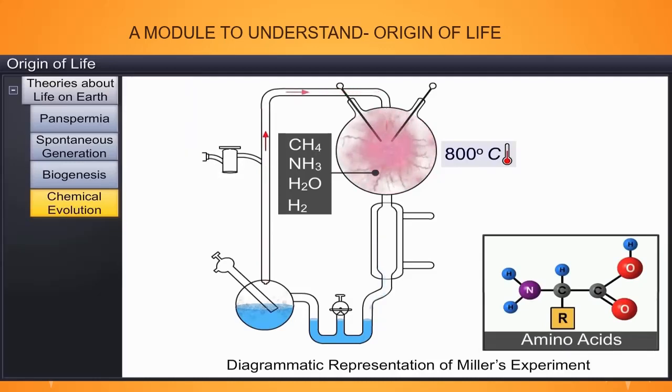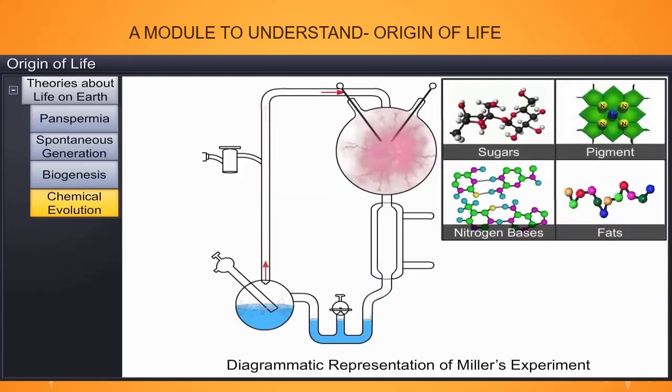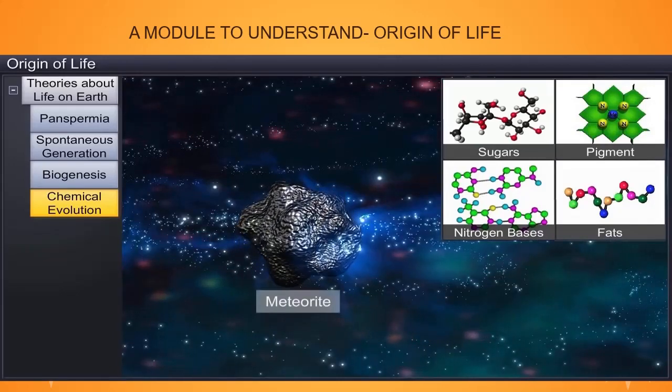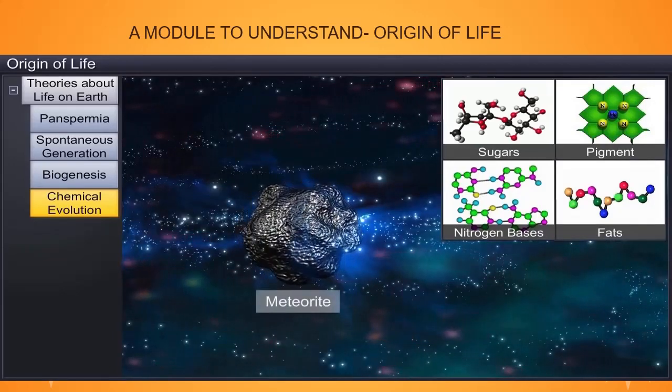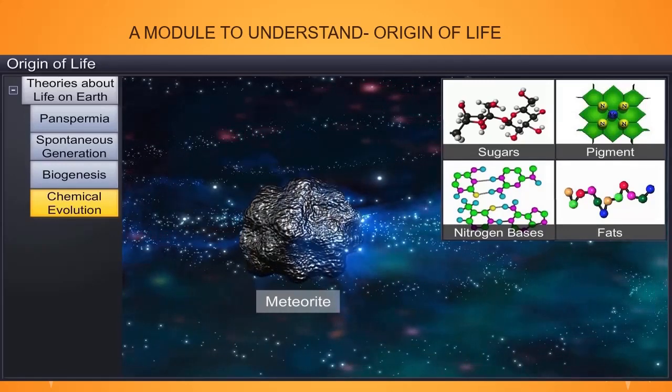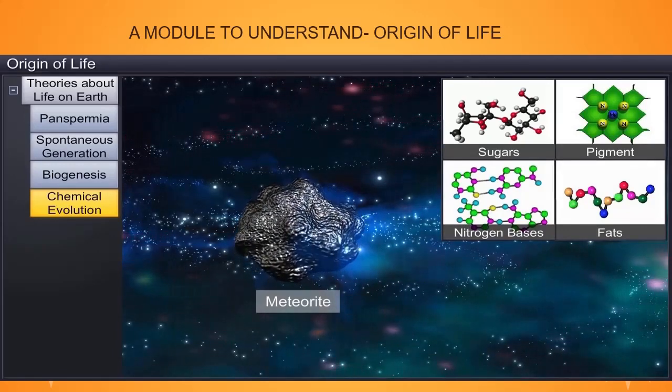Later on, while conducting similar experiments, other scientists observed the formation of sugars, nitrogen bases, pigment, and fats as well. Interestingly, when meteorite content was analyzed, similar compounds were found in them, which proved that similar processes occurred in other parts of the universe as well.